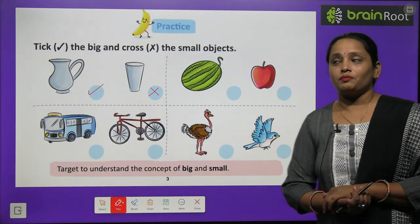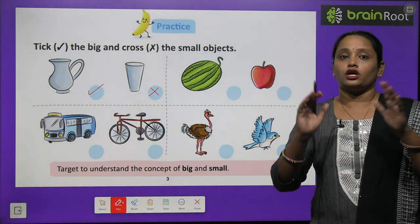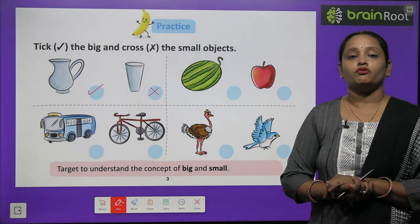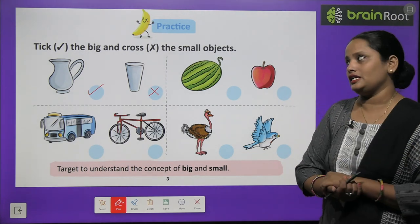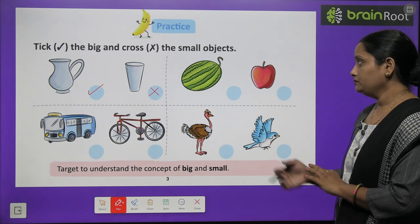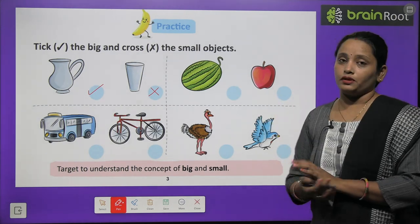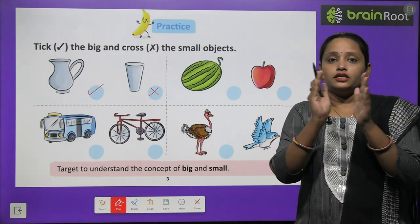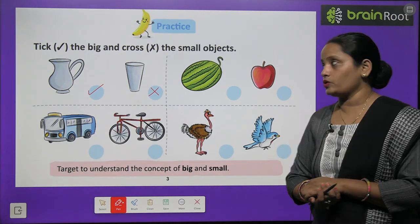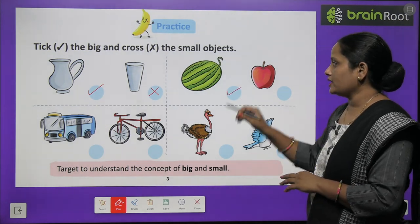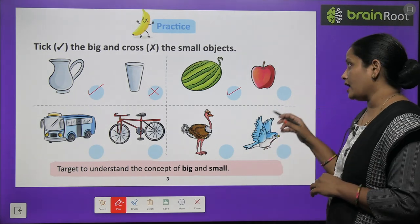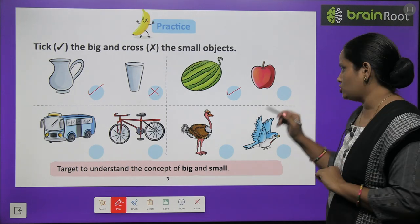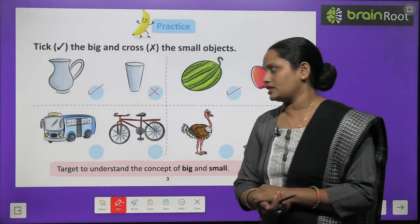Next picture mein ek watermelon ki picture hai. Sab ko khaana achha lagta hai na? And jo doosari picture hai, voh hai ek apple ki. Toh aap batao, which one is big? Watermelon ya phir apple? Watermelon is big, and yoh jo apple hai, voh hai small — ek chhota sa apple. So let's cross it.